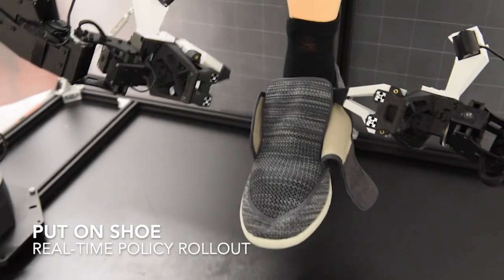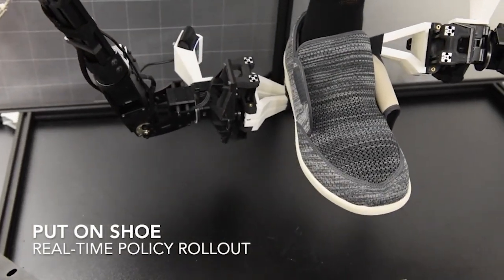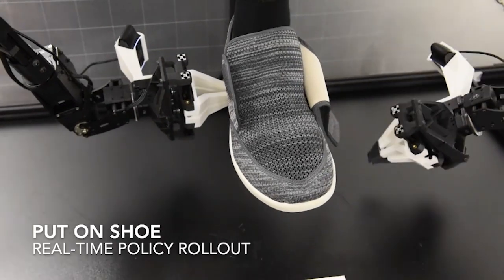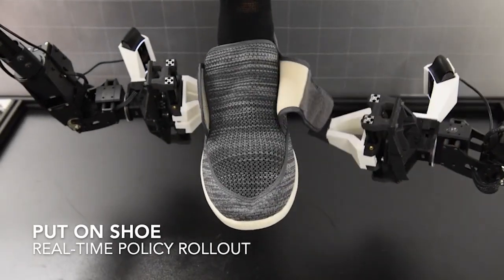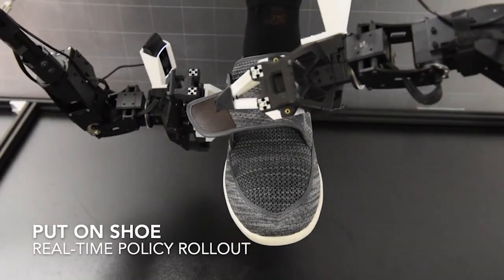We randomized the object position along the 15 cm white reference line for both training and testing. For the following four tasks, ACT obtains 96%, 84%, 64%, 92% success, respectively.